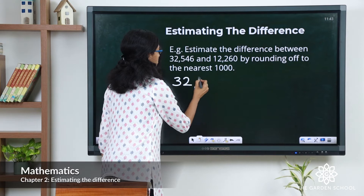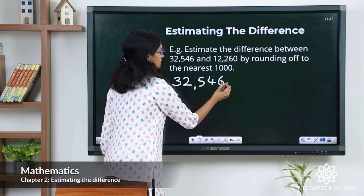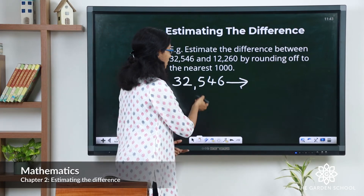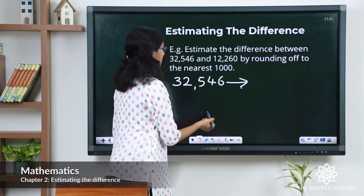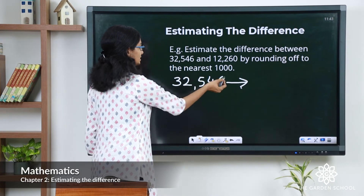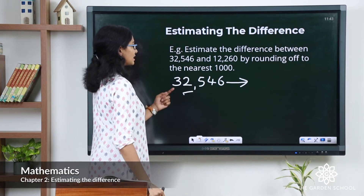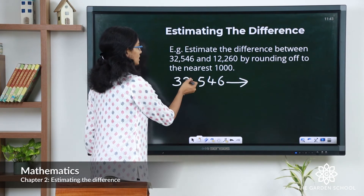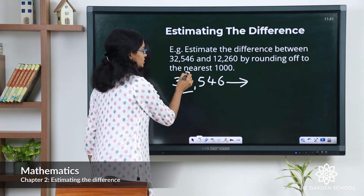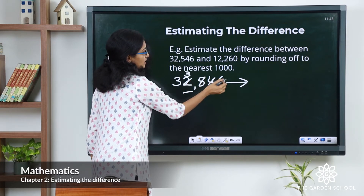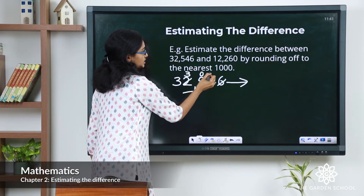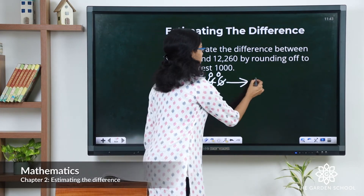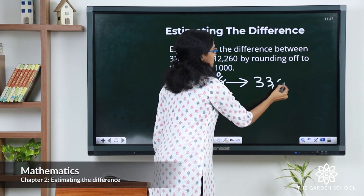So 32,546 rounded off to the nearest thousand — what is the rounding digit here? The thousands digit is 2, and to the right of it we have 5. So let's add 1 to the rounding digit and change the other digits to the right to zeros. That gives you 33,000.